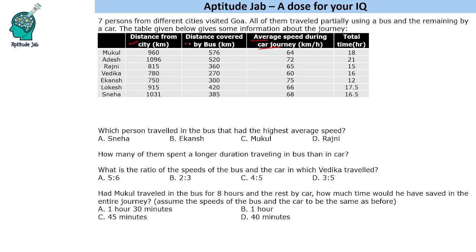So we know the total distance and the distance covered by bus. Subtracting gives us the distance travelled by car. We are given the average speed during the car journey, so we can find the time taken by car. From the total time we can then find the time taken by bus, and from that we can find the speed of the bus.